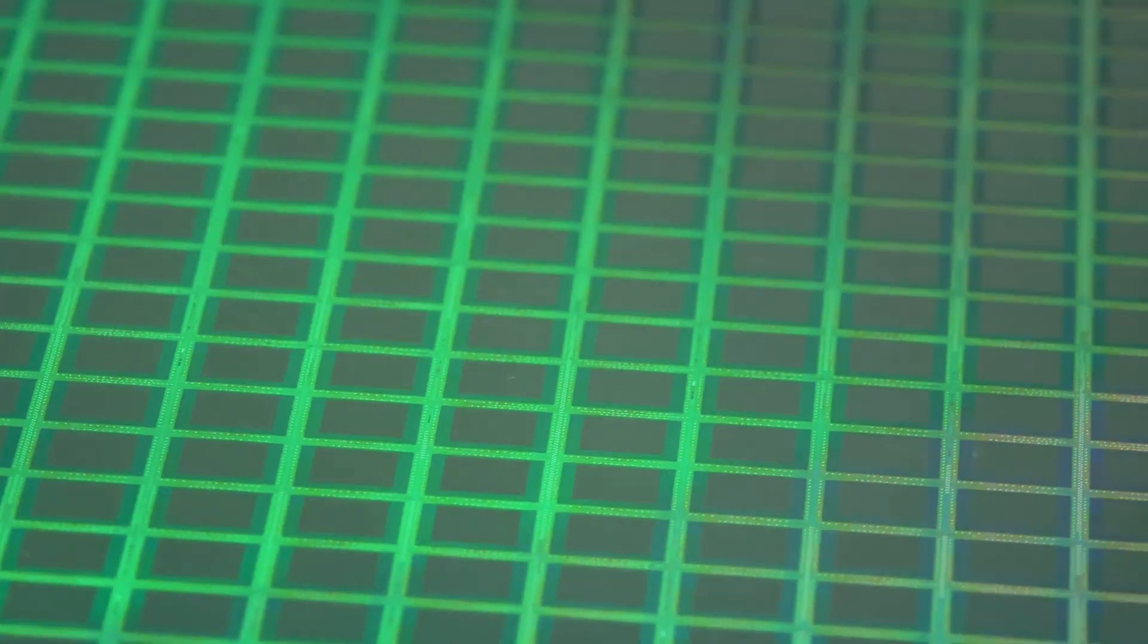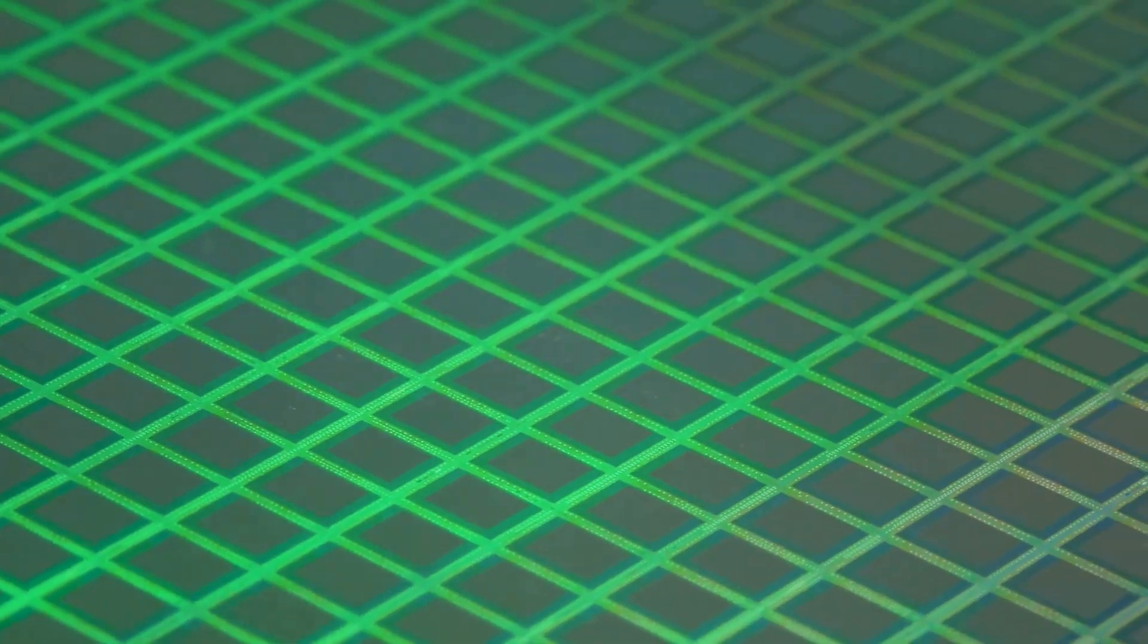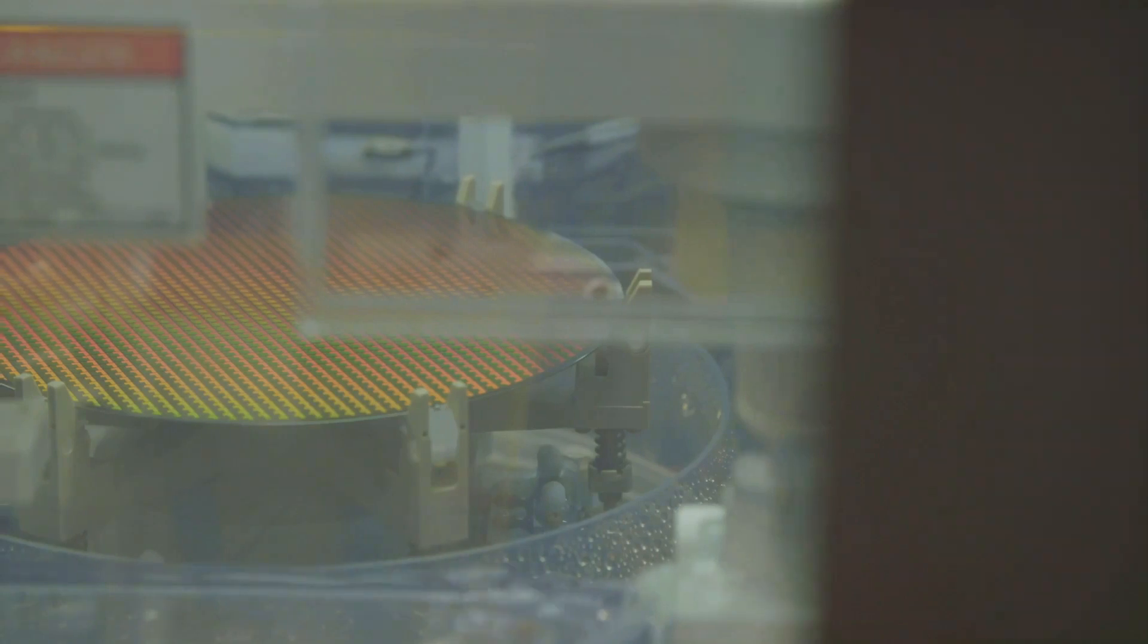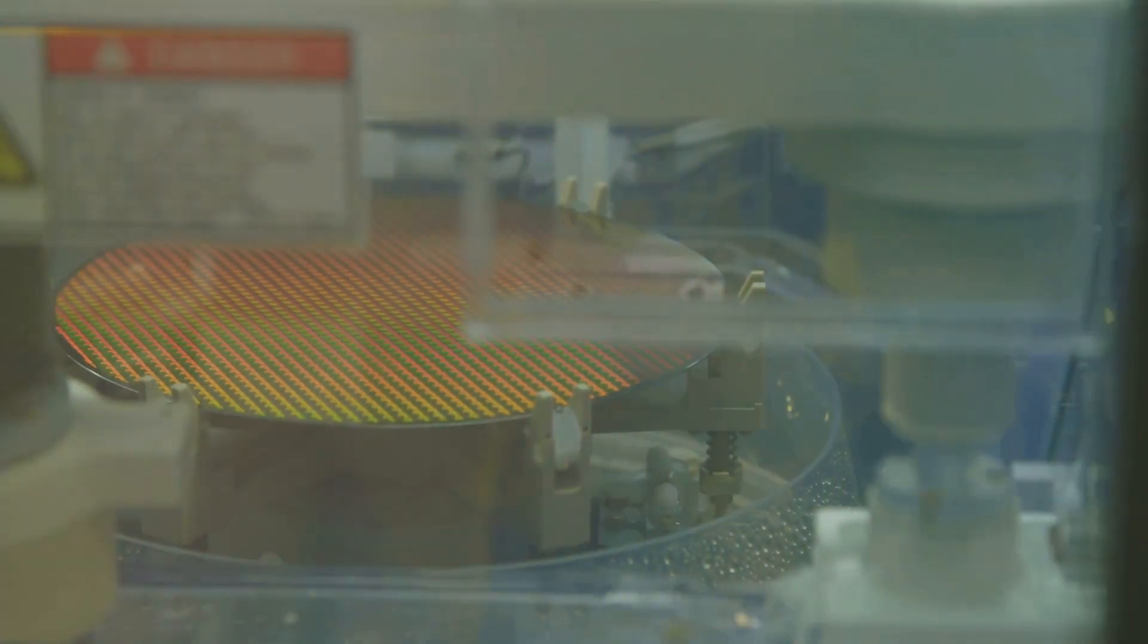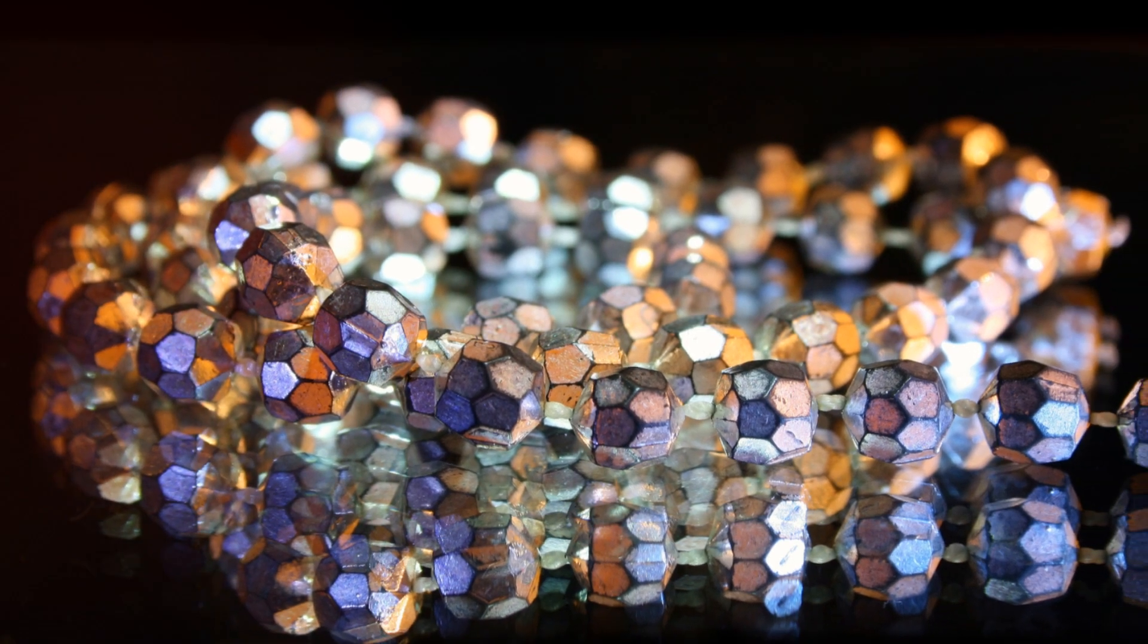Moreover, the Czochralski method allows for meticulous control over the crystal's properties. The orientation, dopant distribution and size of the crystal can be precisely manipulated. This level of control is absolutely essential when it comes to the electronic properties of the final product. The ability to dictate these parameters gives manufacturers the power to tailor the properties of the silicon crystal to specific application requirements.